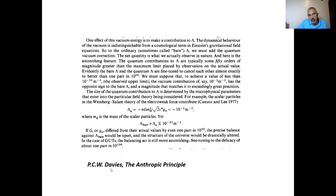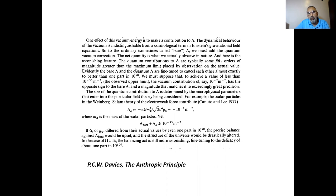Here is something from Paul Davies, a very well-known astrophysicist, from an article called 'The Anthropic Principle.' He says that one effect of the vacuum energy — which has to be there according to quantum field theory — is to contribute to lambda, and that this dynamical behavior is indistinguishable from the cosmological term in Einstein's gravitational field equations. To the ordinary bare lambda we have to add the quantum field correction, and when we do that, the quantum contributions are some 50 orders of magnitude greater than the maximum limit placed by observation. So bare lambda and quantum lambda are fine-tuned to cancel each other almost exactly to better than one part in 10 to the 50.